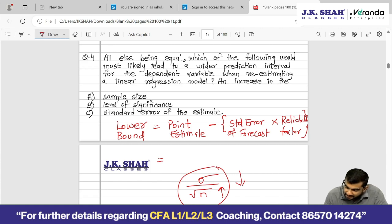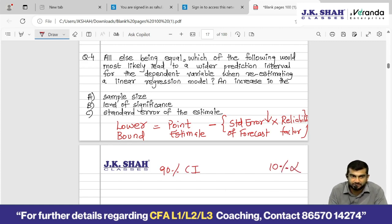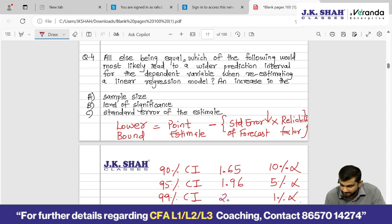A cannot be the answer. Now, an increase in level of significance. At 90% confidence interval, what is the level of significance? 10% is the level of significance, denoted by alpha. At 95% confidence interval level of significance is 5%. At 99% confidence interval level of significance is 1%. Now tell me the critical value for 90%: 1.65, 95%: 1.96, 99%: 2.58. Now, an increase in level of significance. This is the highest level of significance. At highest level of significance, your critical value is the lowest. Here again, reliability factor will reduce. If you take higher level of significance, which will lead to a narrower confidence interval.